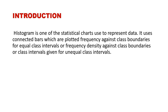A histogram uses connected bars which are plotted as frequency against class boundary for equal class intervals. When you have equal class intervals you use frequency against the class boundary, but when you have unequal class intervals you use frequency density against your class boundaries.